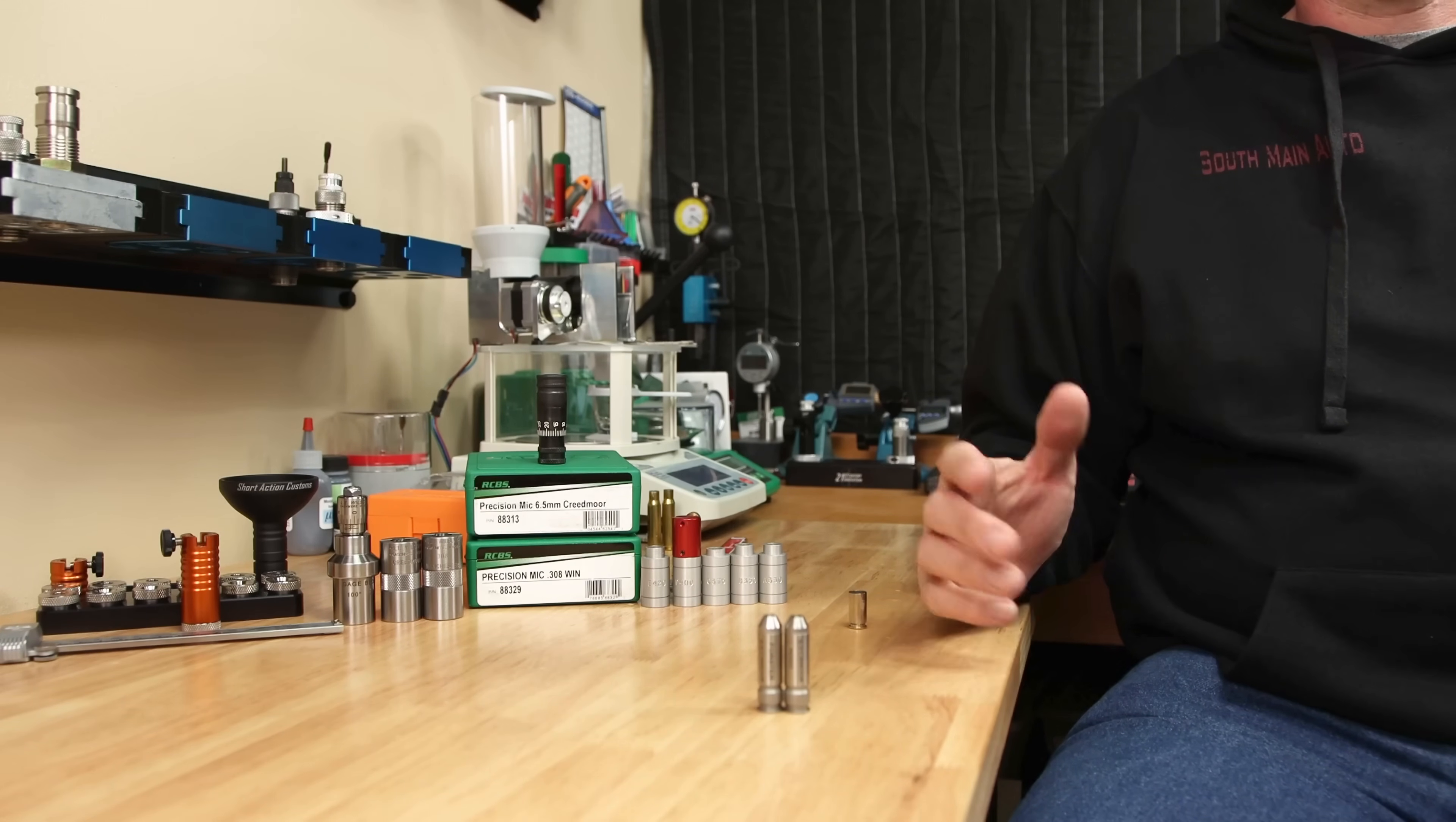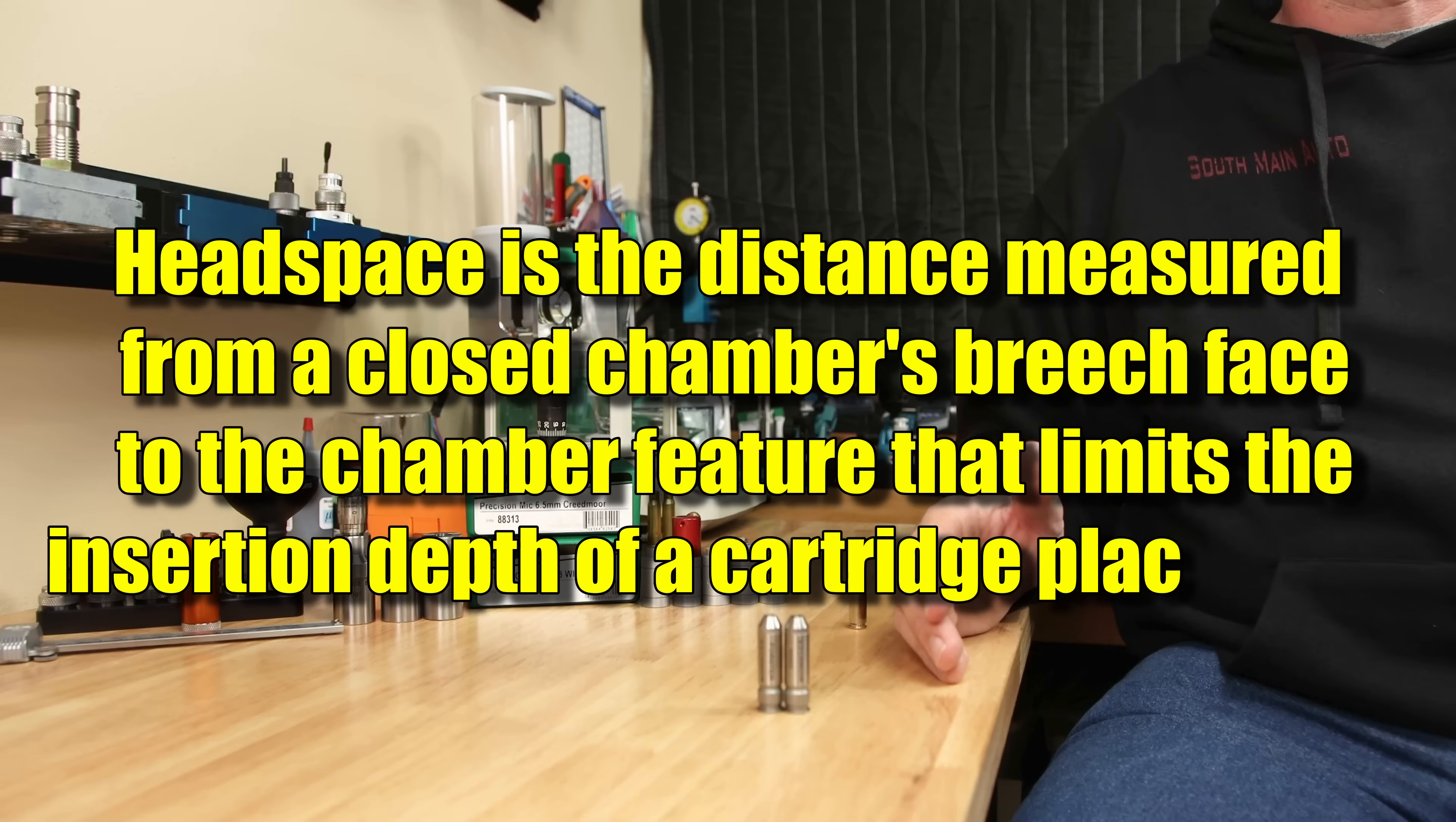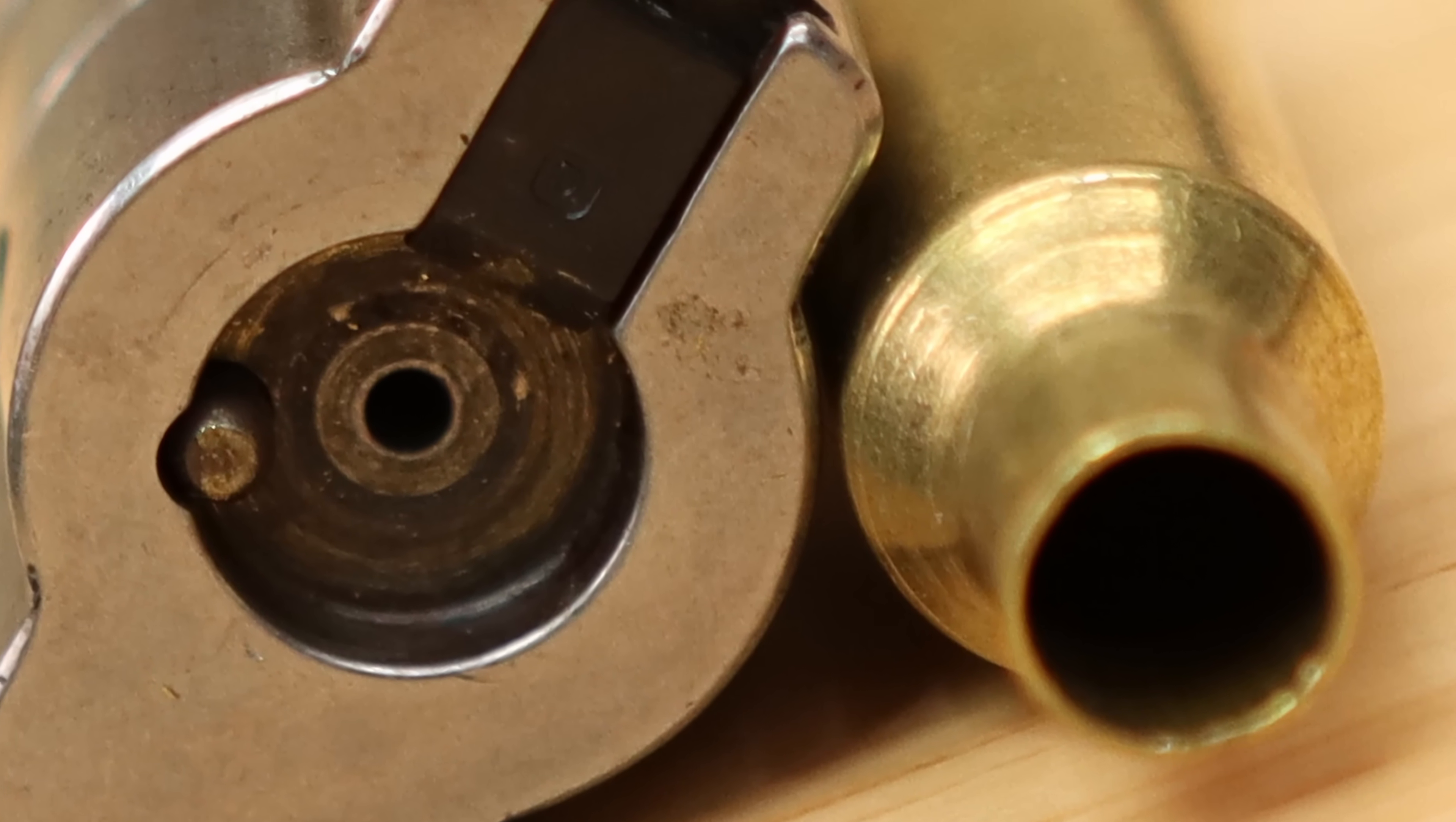By definition, headspace is the distance measured from the closed chamber's breech face to the chamber feature that limits the insertion depth of the cartridge placed in it. Maybe a little bit more simply, it's the dimension from the bolt face to the reference point or a datum line on a shoulder.